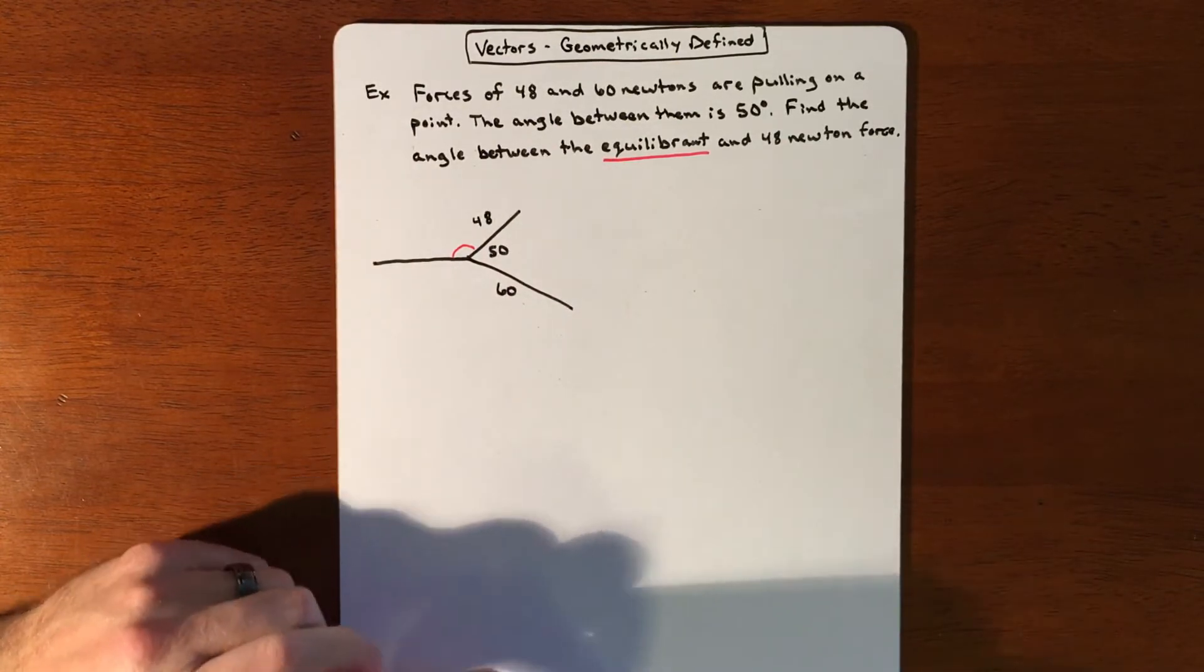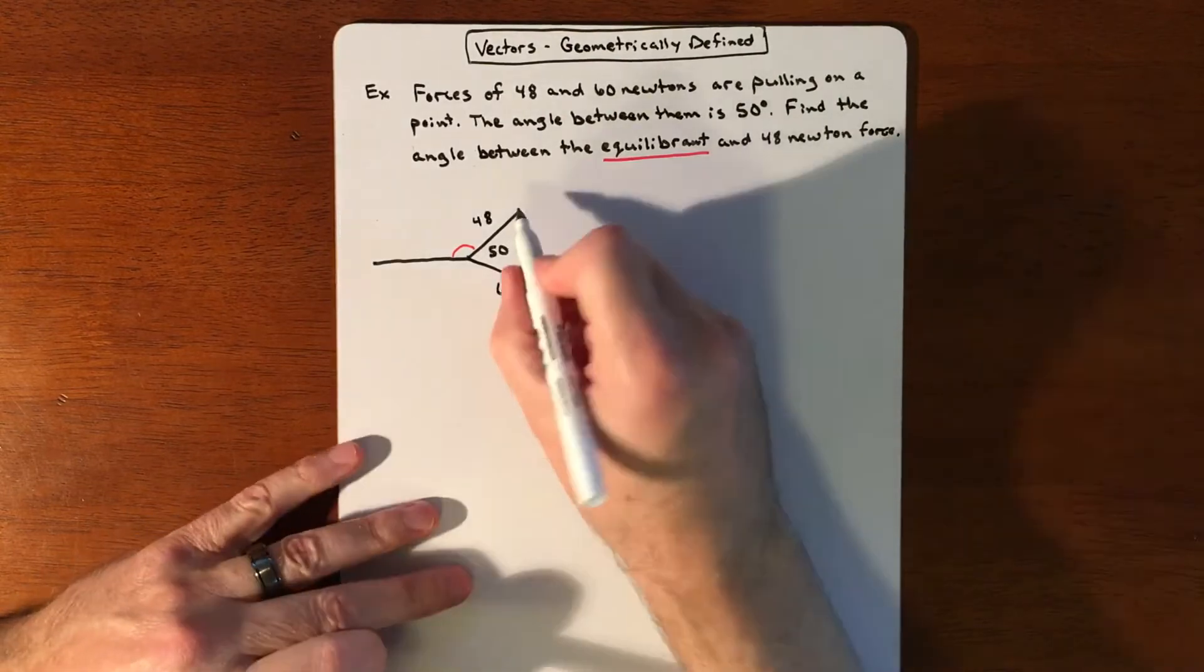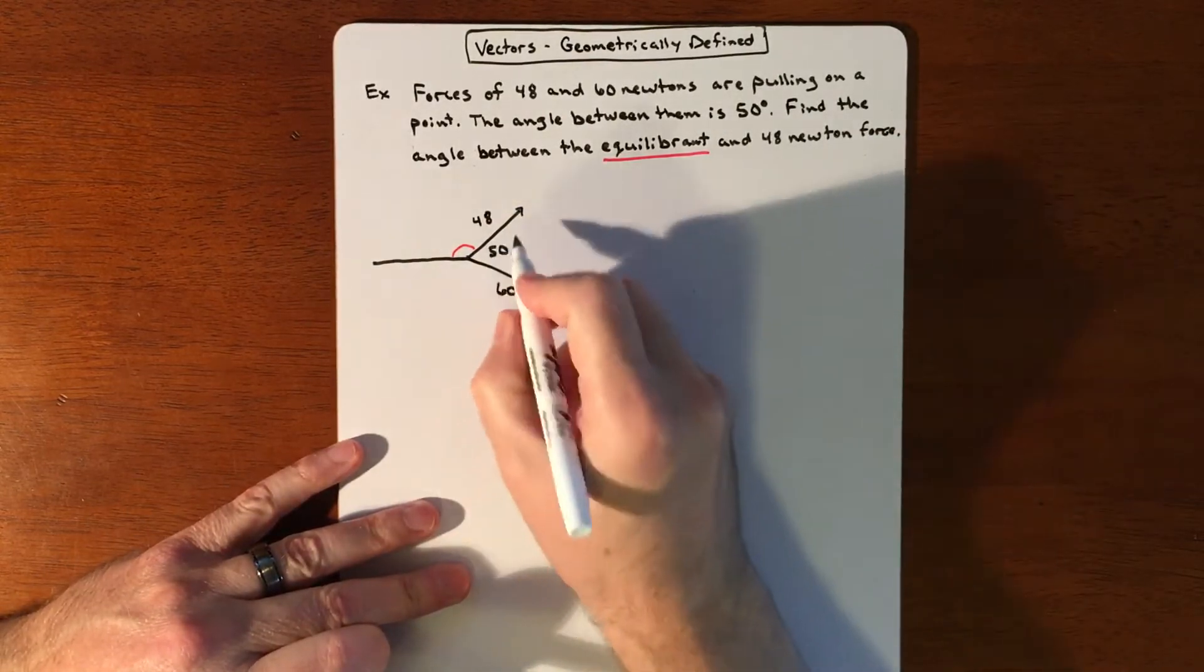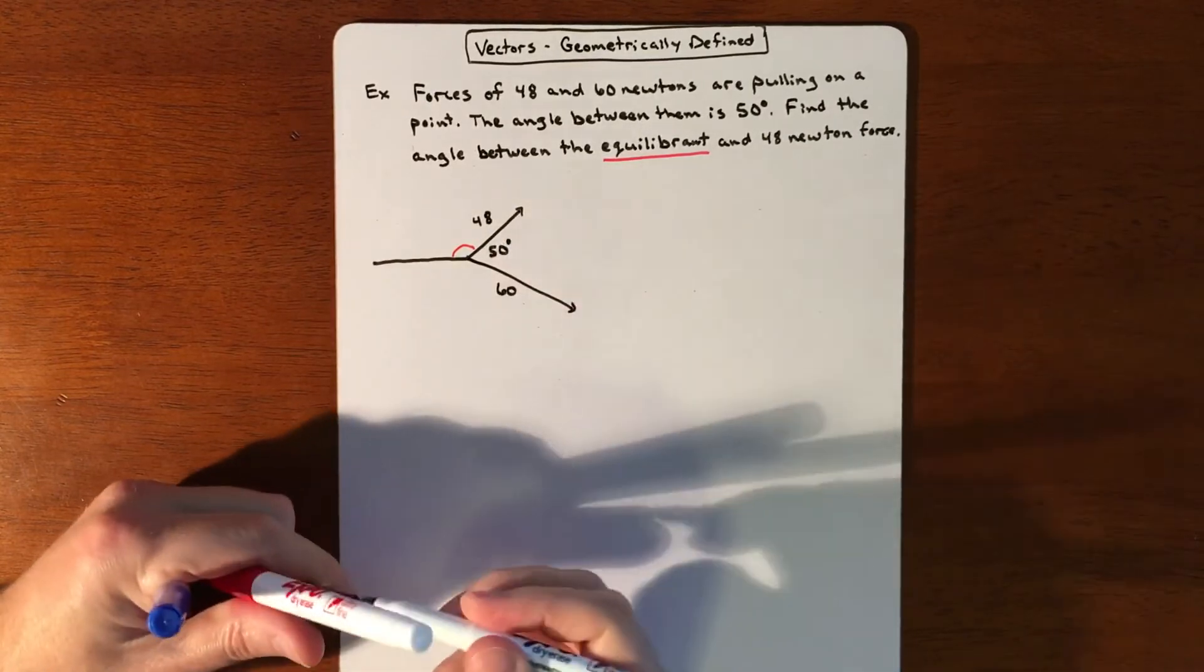So here's how we go about doing this. We have a pull of 48 in this direction, we have a pull of 60 in this direction, and all we know is that the angle between them is 50 degrees.